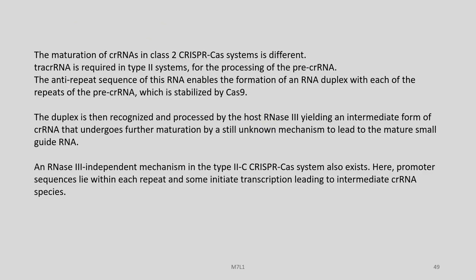The maturation of CRISPR RNA in class 2 CRISPR-Cas systems is different. Tracer RNA is required in type 2 systems for processing of the pre-crRNA. The anti-repeat sequence of this RNA enables the formation of an RNA duplex with each of the repeats of the pre-crRNA, which is stabilized by Cas9. The duplex is then recognized and processed by host RNase3 endonuclease, yielding an intermediate form of crRNA that undergoes further maturation by a still unknown mechanism to lead to the mature small guide RNA. An RNase3-independent mechanism in the type 2 CRISPR system also exists, where promoter sequences lie within each repeat and initiate transcription leading to intermediate crRNA species.